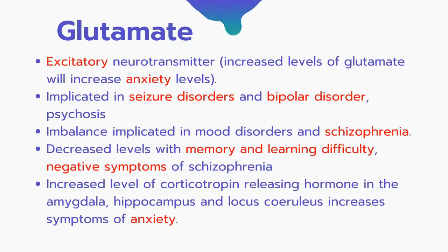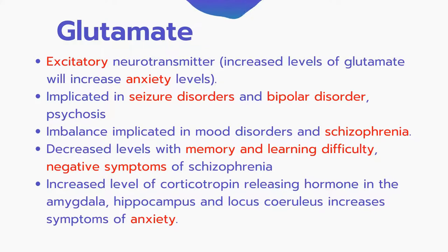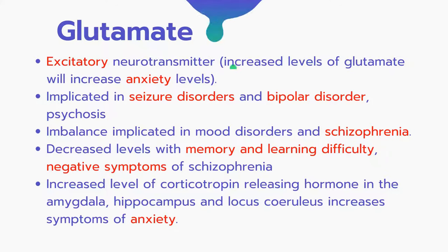The sixth neurotransmitter is glutamate, an excitatory neurotransmitter. Increased levels of glutamate raise anxiety and are implicated in seizure disorders, bipolar disorder, and psychosis. Glutamate imbalance is also implicated in mood disorders and schizophrenia. Decreased levels of glutamate are seen in patients with memory and learning difficulties, and in the negative symptoms of schizophrenia.